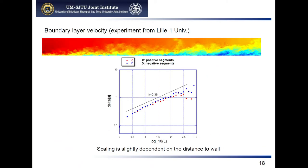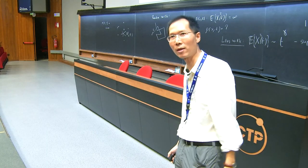The last example is a new result from PIV experimental data from Lili Wang's university. Using many different cameras and our new method, we detect a very clear scaling relation. At different wall-normal distances, the scaling is steadily different — shown as blue dots and red dots — revealing important physics. Using the structure function alone does not give such results.